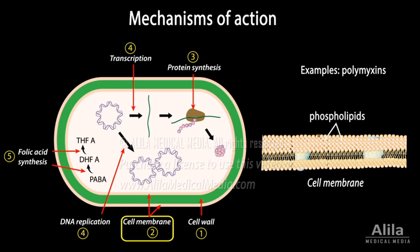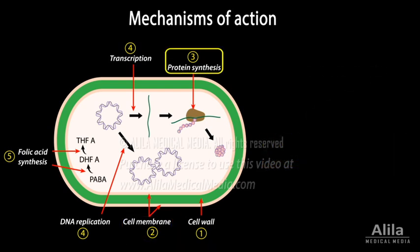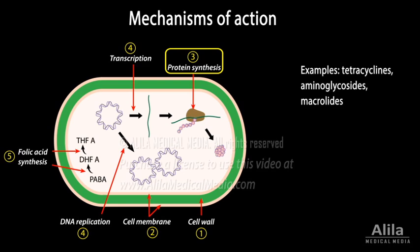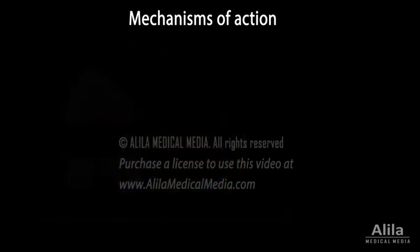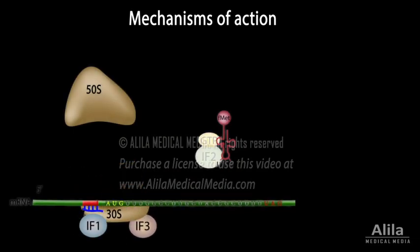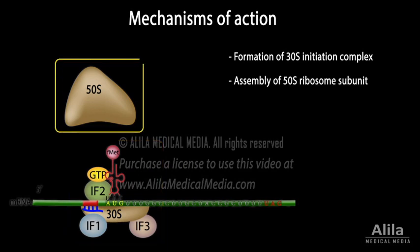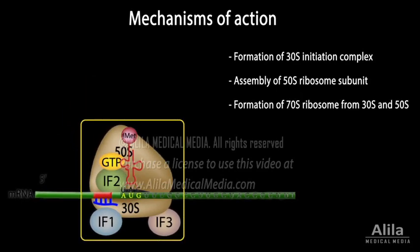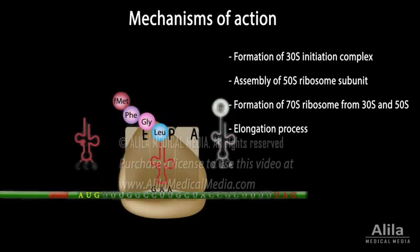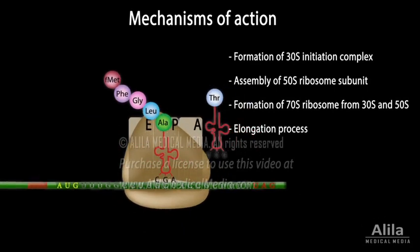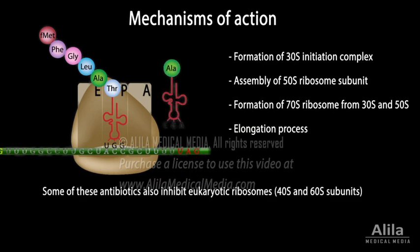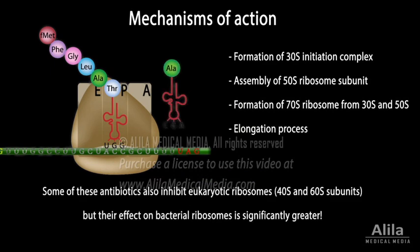Their clinical use is therefore limited to topical applications. Inhibitors of protein synthesis: antibiotics that interfere with bacterial protein synthesis may act at different steps of this process, including formation of the 30S initiation complex, assembly of the 50S ribosome subunit, formation of the 70S ribosome from the 30S and 50S complexes, and the elongation process. Some of these antibiotics also inhibit the eukaryotic mammalian counterparts, but their effect on bacterial ribosomes is significantly greater.